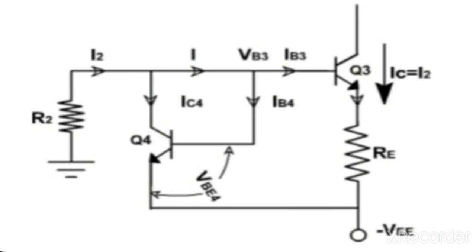Current mirror circuits are most commonly used in integrated amplifiers because of its simplicity and ease of fabrication. In this circuit transistors Q3 and Q4 are identical, hence their base emitter voltages must be same and also their base and collector currents must also be approximately equal.